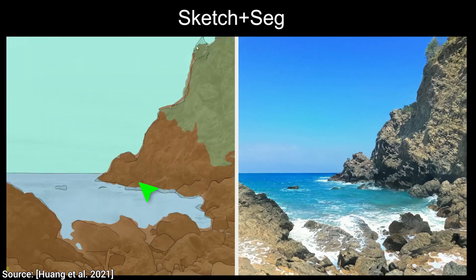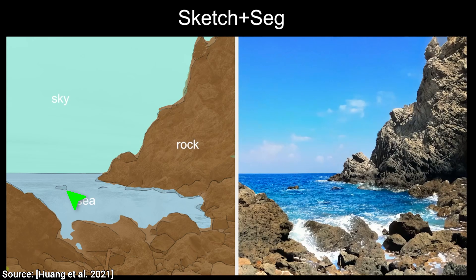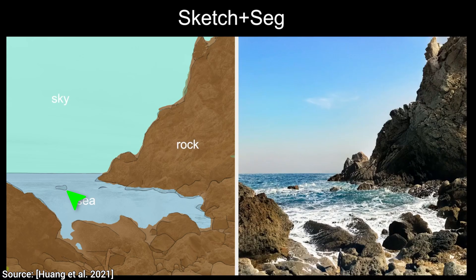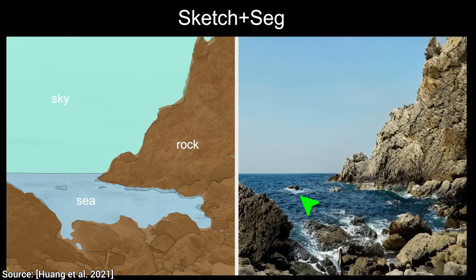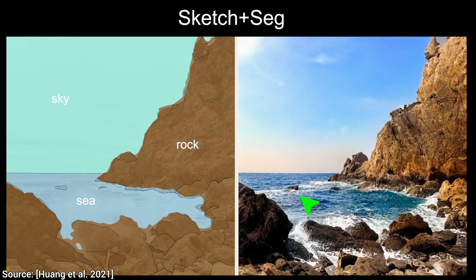With this new work, we can even draw a piece of rock within the sea, and the rock will indeed appear. And not only that, but it understands that the waves have to go around it too. An understanding of physics — that is insanity. My goodness.